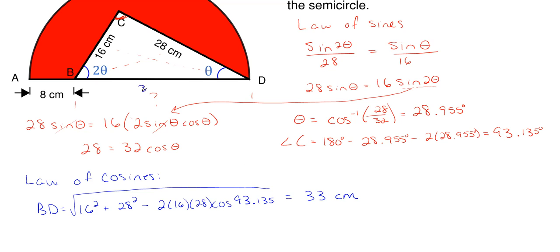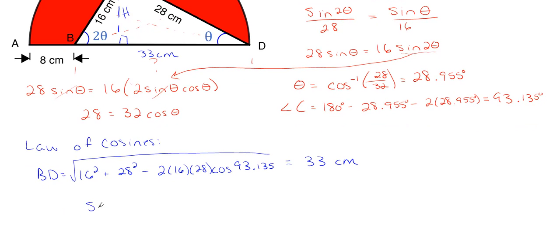Now that I have BD = 33 centimeters, I can get the overall diameter for the semicircle. But for the white triangle, I still need the height. I can draw a perpendicular line from C down to BD and use the right triangle with theta and the 28 centimeters. So: sin(28.955°) = h / 28, which gives a height of approximately 13.555 centimeters.